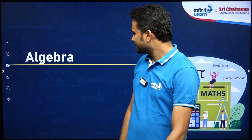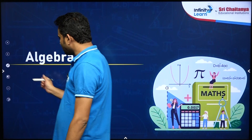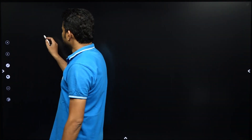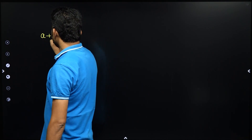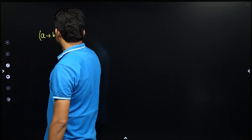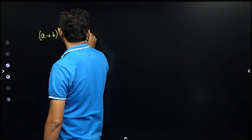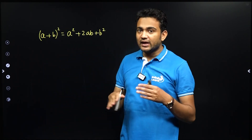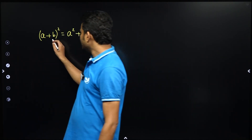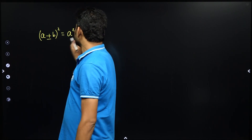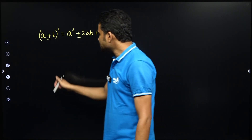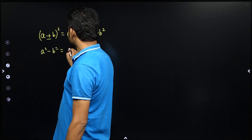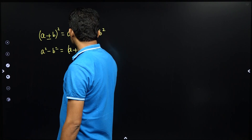Then it will be fun to solve the questions. So the first identity that you should know is a plus b whole square. So what is a plus b whole square? This is a square plus 2ab plus b square. Similarly, a minus b whole square has minus 2ab; remaining terms are the same. And a square minus b square is a plus b into a minus b.